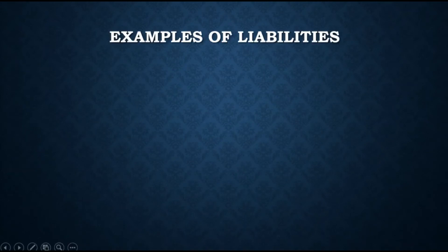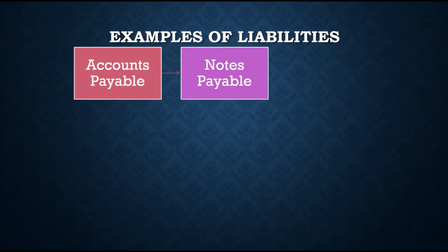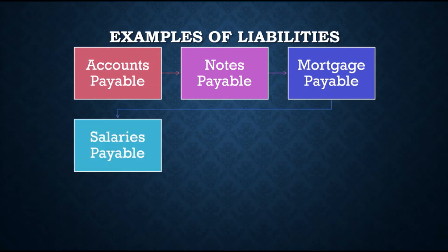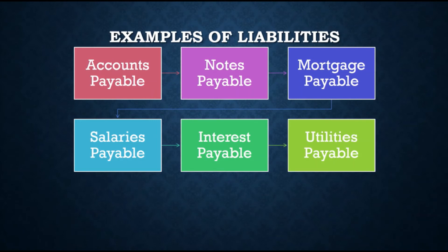What are examples of liabilities? First is accounts payable — amounts due to creditors for assets acquired on account. Next is notes payable — amounts due to creditors evidenced by a written promise to pay. Then mortgage payable — long-term debts secured by collateral. Next is salaries payable — unpaid salaries of employees at the end of the accounting period. Interest payable is the interest due on borrowed funds, and utilities payable is the unpaid electric and water bills. Salaries, interest, and utilities payable fall under accrued expenses — expenses incurred but not yet paid.